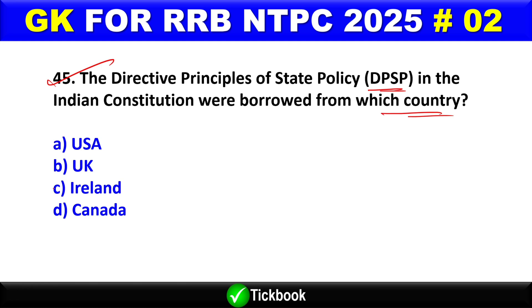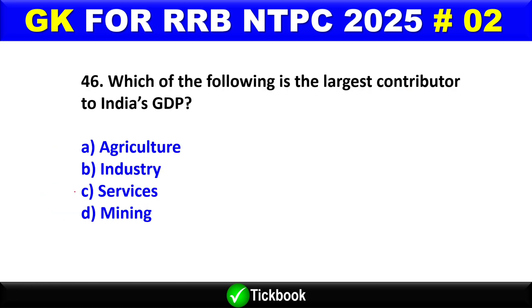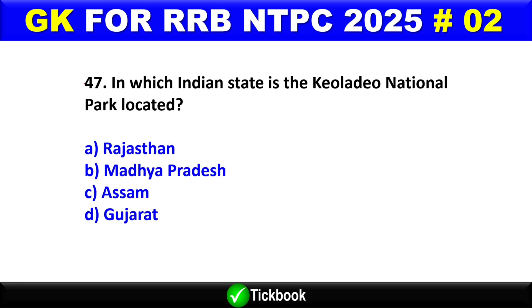Question number 46: Which of the following is the largest contributor to India's GDP? Option C is the right answer — the services sector. Question number 47: In which Indian state is the Keoladeo National Park located? Option A is the right answer — Rajasthan.